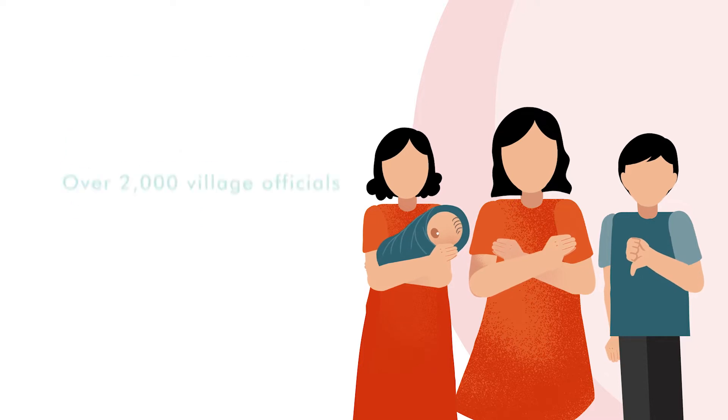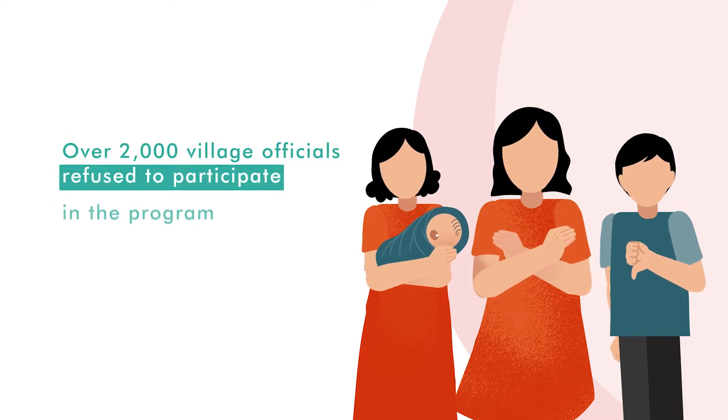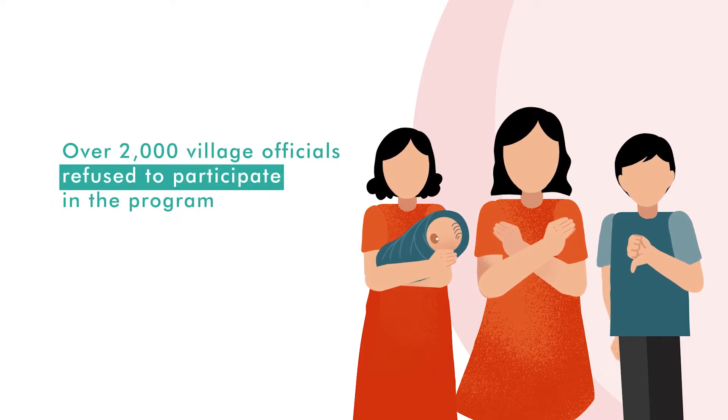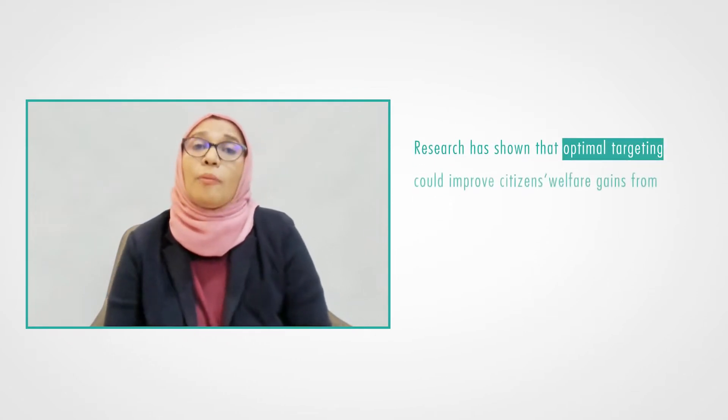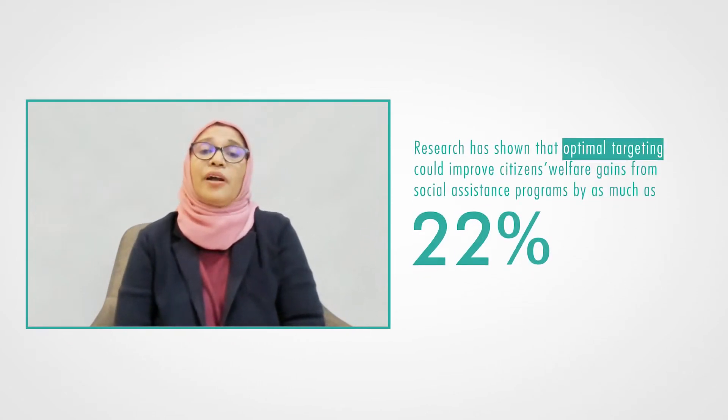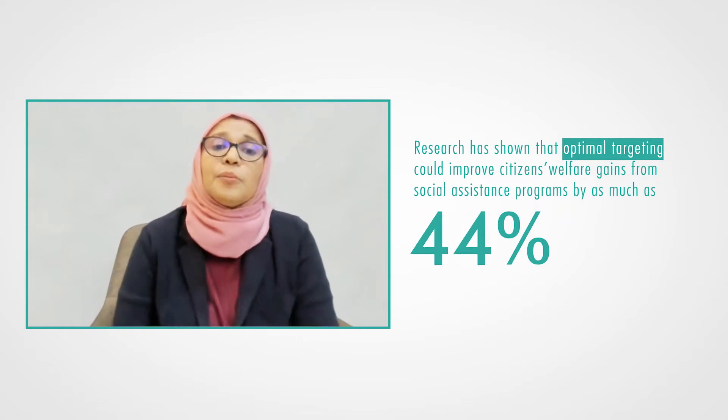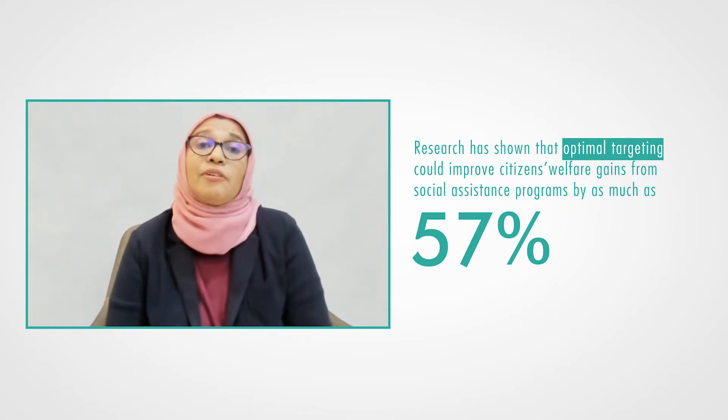Many people also voiced dissatisfaction with the programs. For this reason, over 2,000 village officials refused to participate in the program. Given the vast amount of money spent on social assistance programs and their importance as a lifeline for poor families, it is imperative to ensure that these programs deliver on their intended goals. Research has shown that optimal targeting could improve citizens' welfare gain from social assistance programs by as much as 57%.